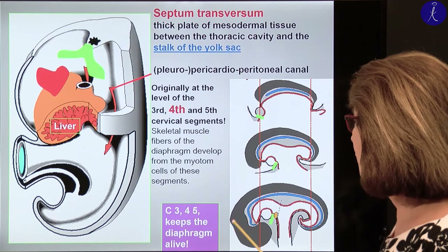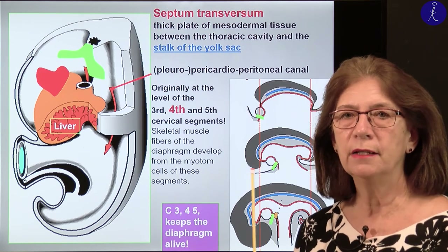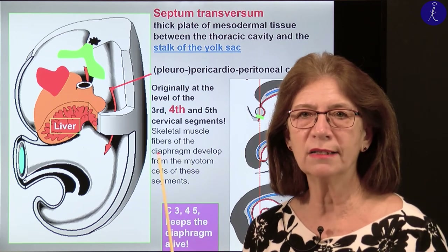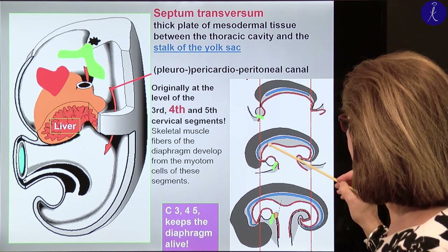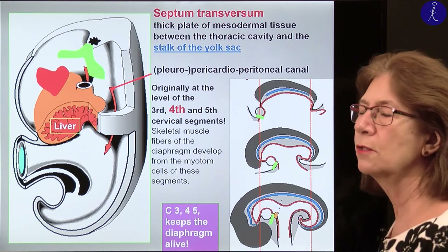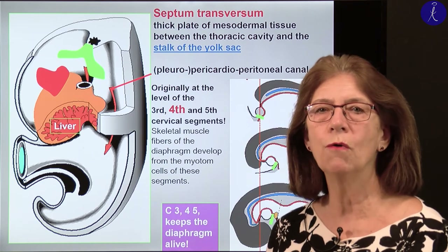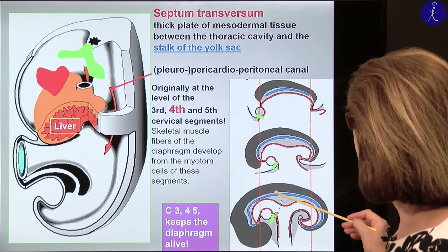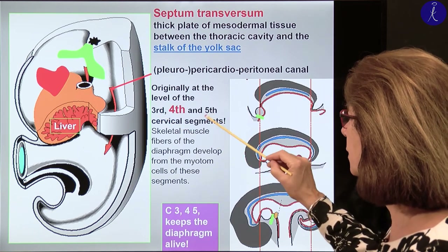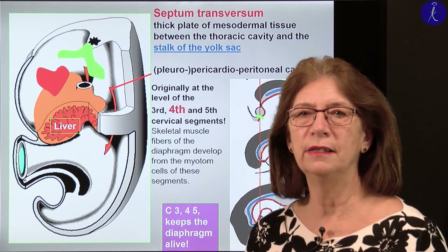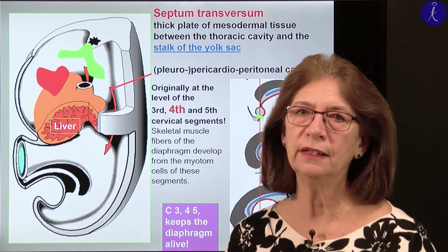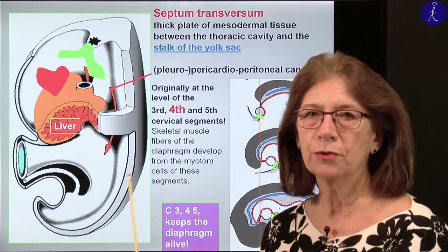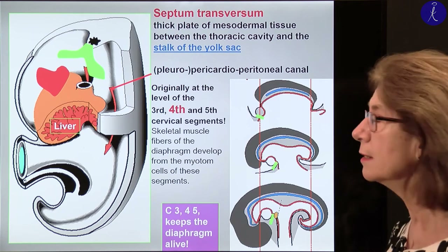You know that the paraxial mesoderm will have the myotome, sclerotome, and dermatome cells. For us now the myotome cells are most interesting. The myotome cells in the fourth segment will be just opposite to the septum transversum, so they will invade it — and since all skeletal muscle comes from myotome cells, we need them in order to have muscle in the diaphragm. We get myotome cells mostly from the fourth, and a little from the third and fifth cervical segments. This also explains the innervation of the diaphragm from the phrenic nerve: C3, 4, 5 keeps the diaphragm alive.